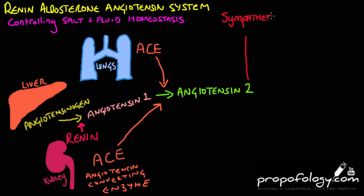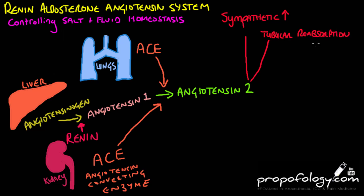Angiotensin 2 acts all over the body. It increases the sympathetic tone, or the fight-or-flight response, and increases the kidney's tubular absorption of sodium and chloride, causing the water in the nephrons and kidney to re-enter the main blood vessels rather than being urinated out, thus improving blood pressure.